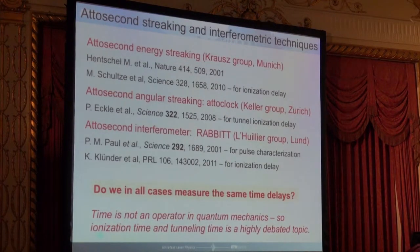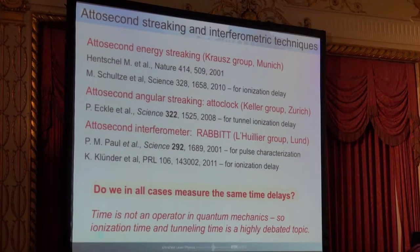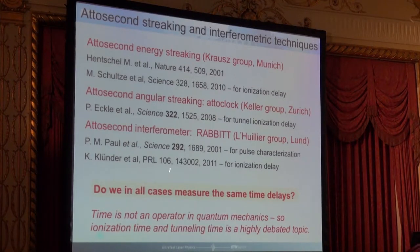For attosecond ionization dynamics, there have been three different techniques used which differ from traditional pump-probe. The first is the attosecond energy streaking, pioneered by Ferenc Krauss. Then the attosecond angular streaking, which I called the attoclock, pioneered in my group. And then the attosecond interferometry — the RABBITT — which was actually the first technique to measure attosecond pulses, and was used by Anne L'Huillier's group to do the ionization. These are three different techniques, and I want to explain what time they actually measure and whether we ultimately measure the same time.